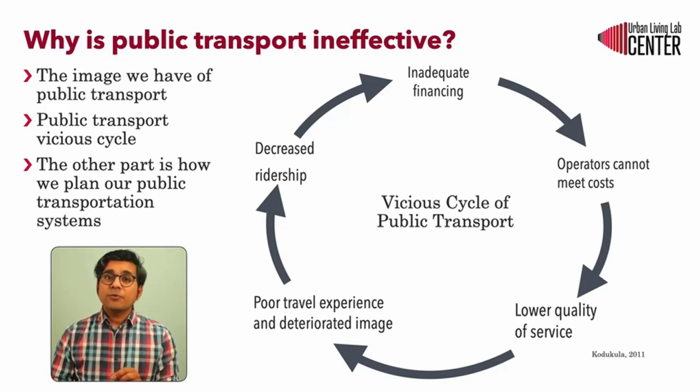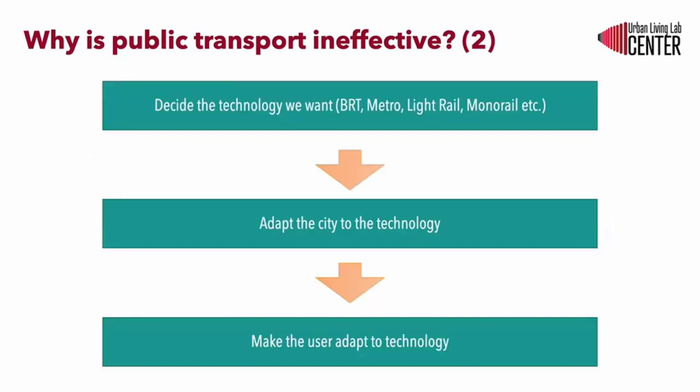The other problem is how we plan. Usually in many of our cities, decision makers decide on the technology for the transportation system first. This is usually expressed as 'we need a metro rail, a light rail, or a BRT system to solve our traffic problems.' This decision could be because of influence from the manufacturing lobby or by trying to replicate the successes from other cities.